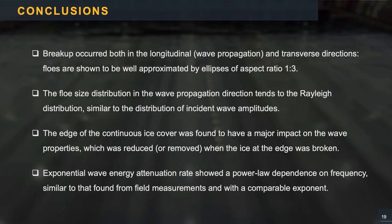In conclusion, a brief recap of the main results of the experiment. So the breakup occurred both in the longitudinal and transverse directions, and the floes are shown to be well approximated by ellipses. The floe size distribution in the wave propagation direction tends to the Rayleigh distribution, similar to the distribution of the incident waves. The edge of the continuous ice cover was found to have a major impact on the wave properties, which was reduced or removed when the ice at the edge was broken, and the exponential wave energy attenuation rate shows a power law dependence on frequency, similar to that found from field measurements.